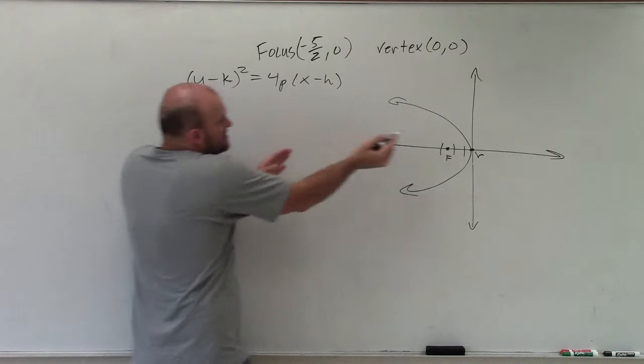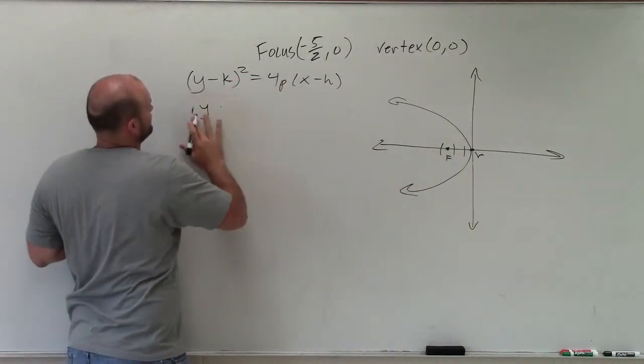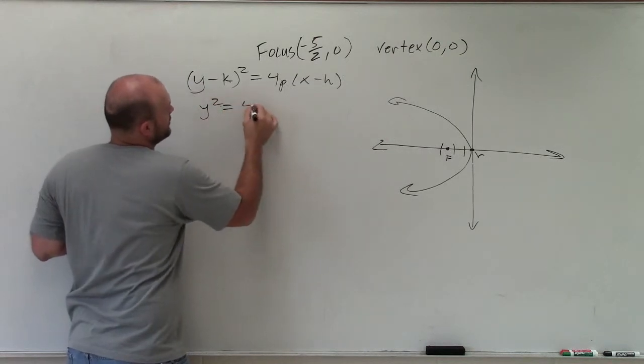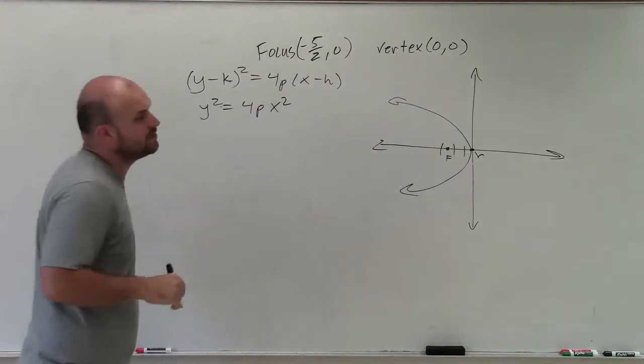Since our vertex is at the origin, h and k are 0. So y is just y squared equals 4p times x. Now, the only thing is we don't know what p is.